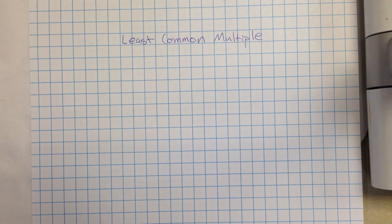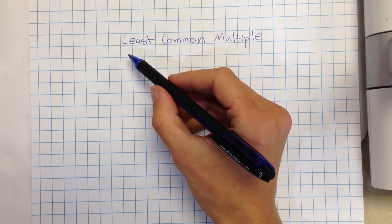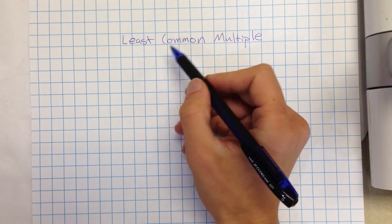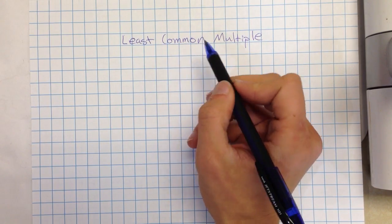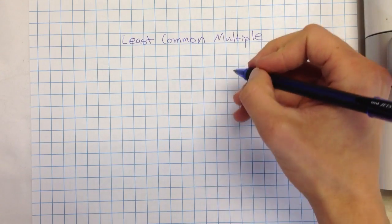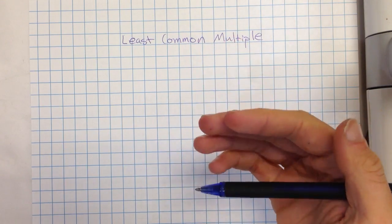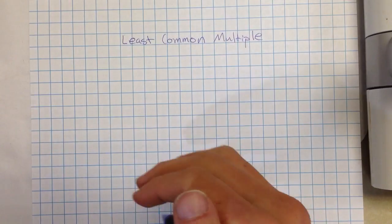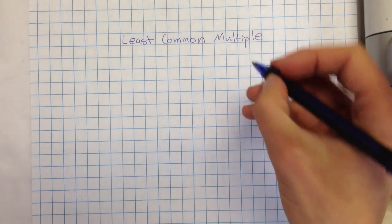With least common multiple, we want to think that L is for least, it's like the smallest, common is what two or more numbers have in common, and multiple. Multiples are, there's like many of them. We had multiples many, factors few. Multiples, it has the word multiply in it.